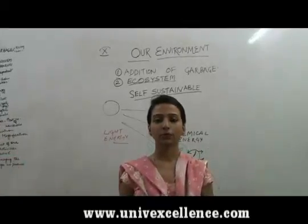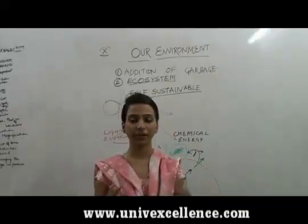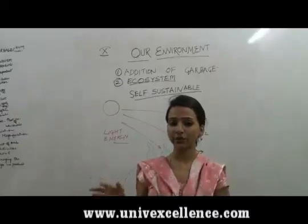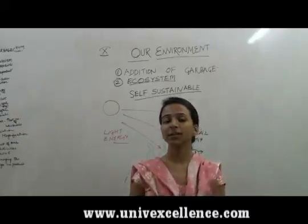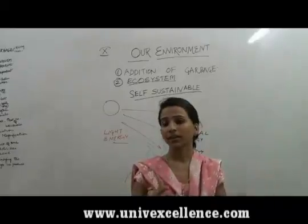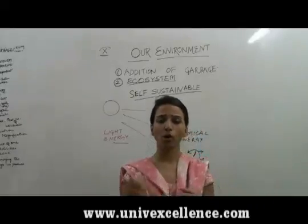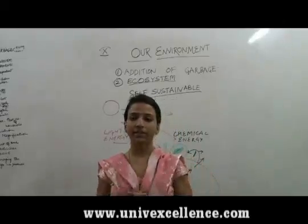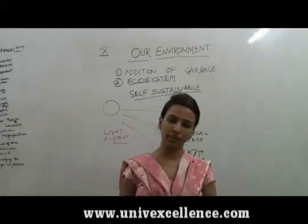We just came to know about examples of ecosystems. The ecosystems which are naturally made, like ponds, lakes, and forests — these are naturally made ecosystems. While ecosystems like an aquarium, an orchard, a garden, or a crop field are man-made systems, so they are known as man-made ecosystems.